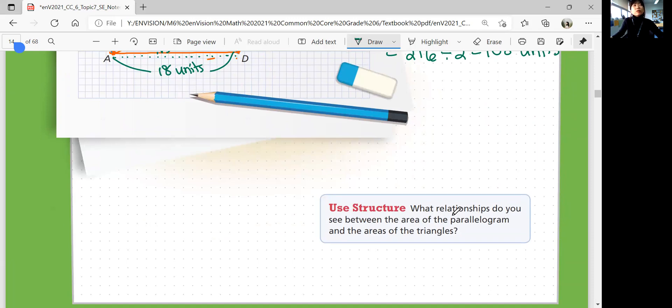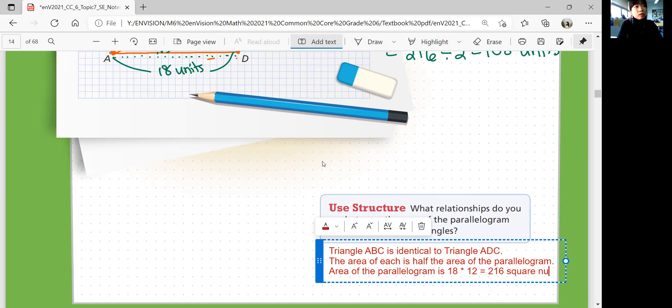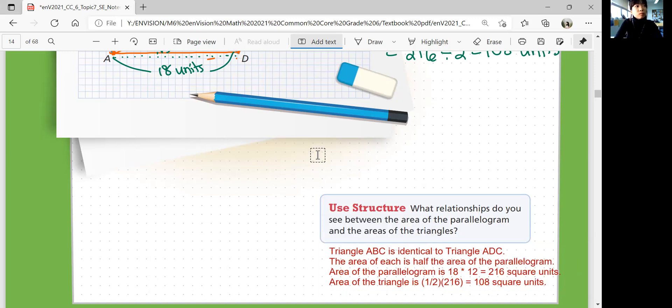So what relationships do you see between the area of the parallelogram and the areas of the triangles? You can say triangle ABC is identical to triangle ADC and the area of each is half the area of the parallelogram. So the area of the parallelogram is 18 times 12, which is equal to 216 square units. So the area of the triangle is one half times 216 is equal to 108 square units.